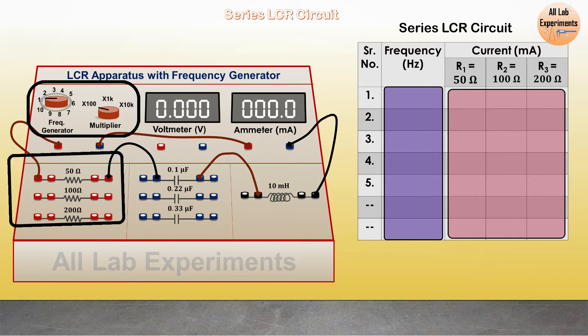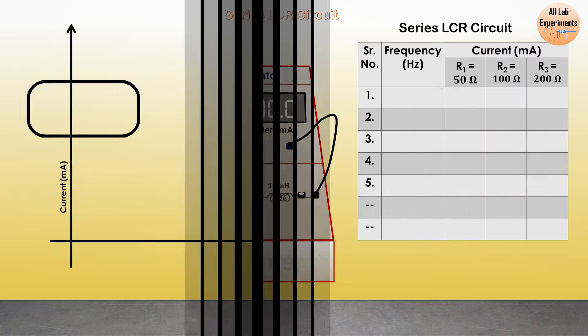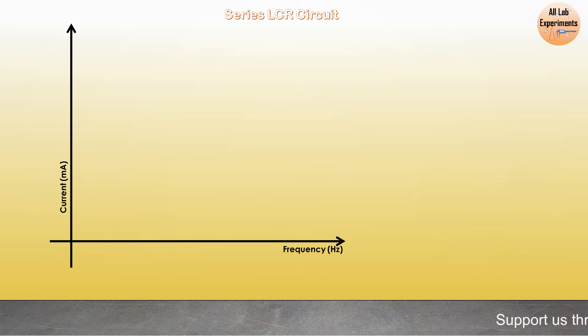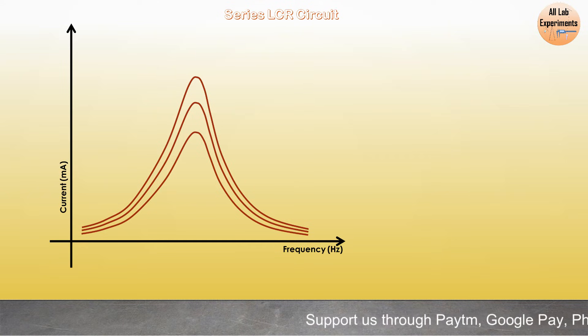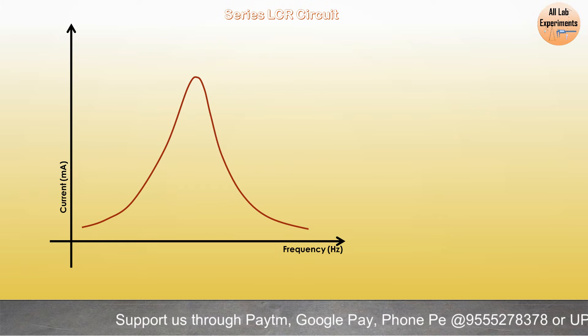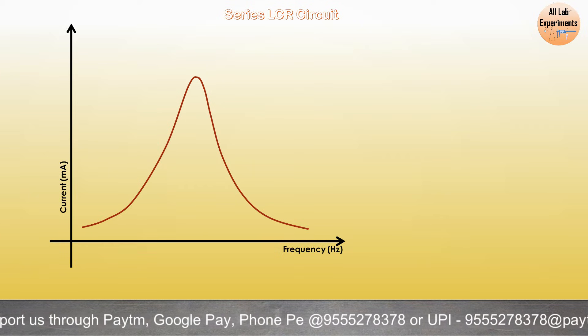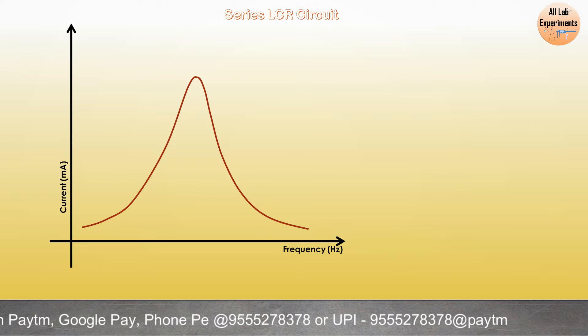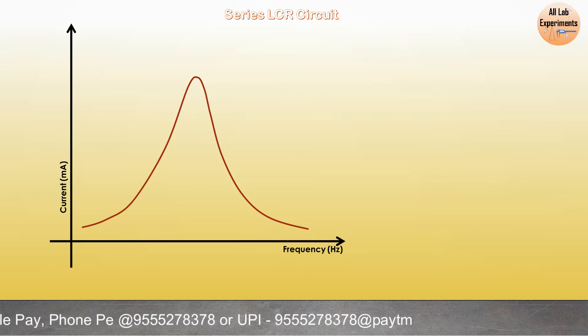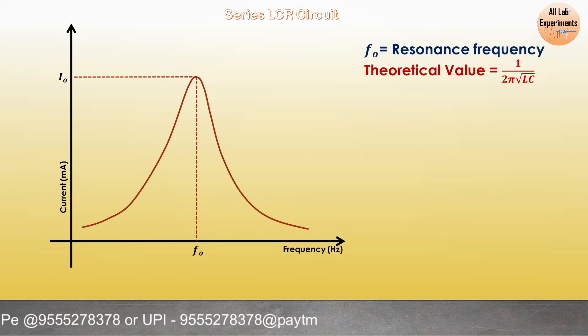Now if we plot this ammeter current with respect to the frequency, we will observe curves like this. These are for different values of resistances. Let's pick one curve out of this which we have drawn for R1. The frequency at which the current is maximum is our resonance frequency.